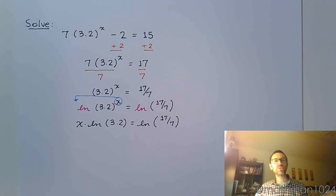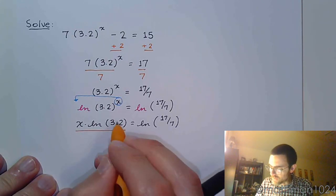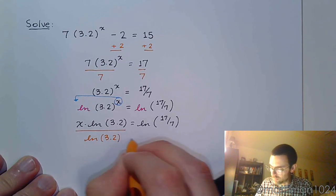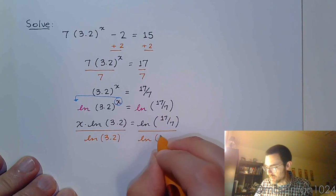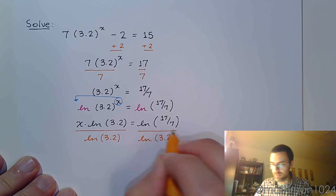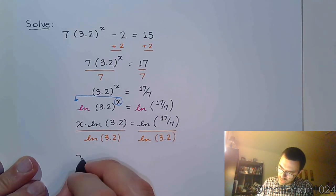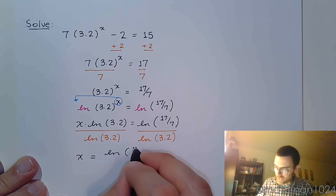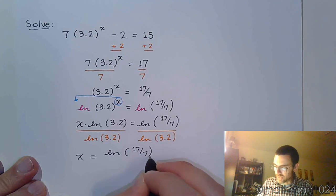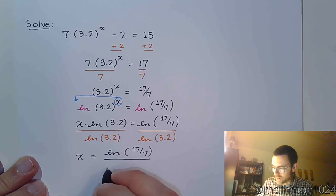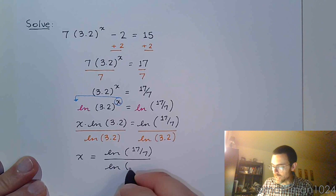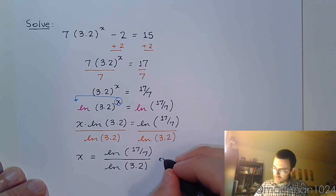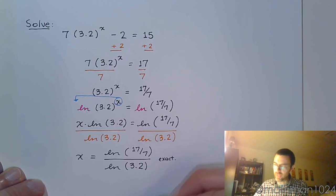And that's just one little step to get x by itself, because you want to get rid of this factor of the natural log of 3.2. So divide both sides by that, and you get your exact value. No matter how nasty this is, this is still an exact value. Right? I didn't turn anything into a decimal that wasn't already a decimal. So everything is pure. This is an exact value.